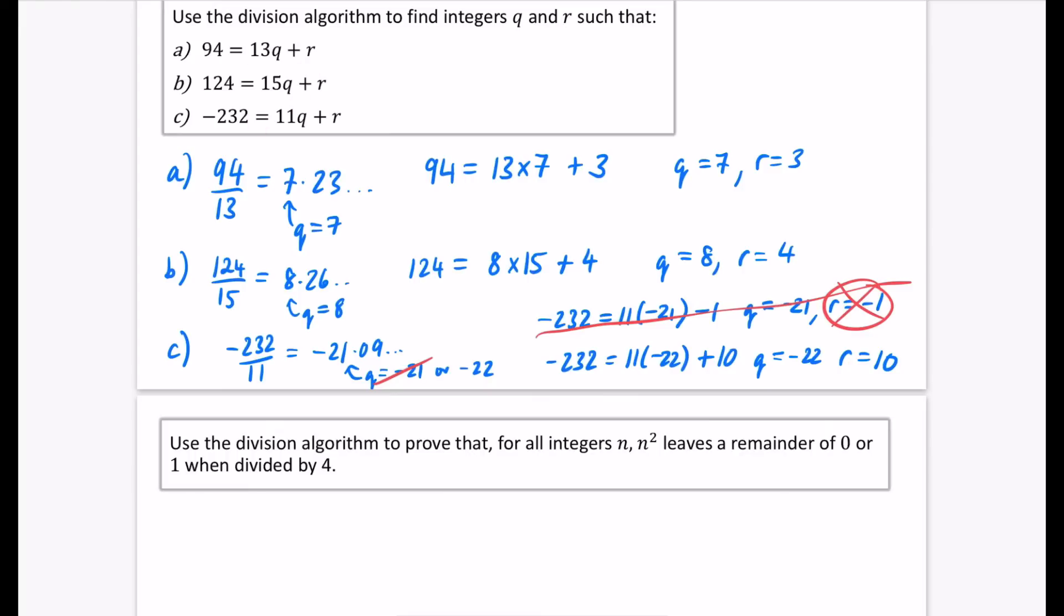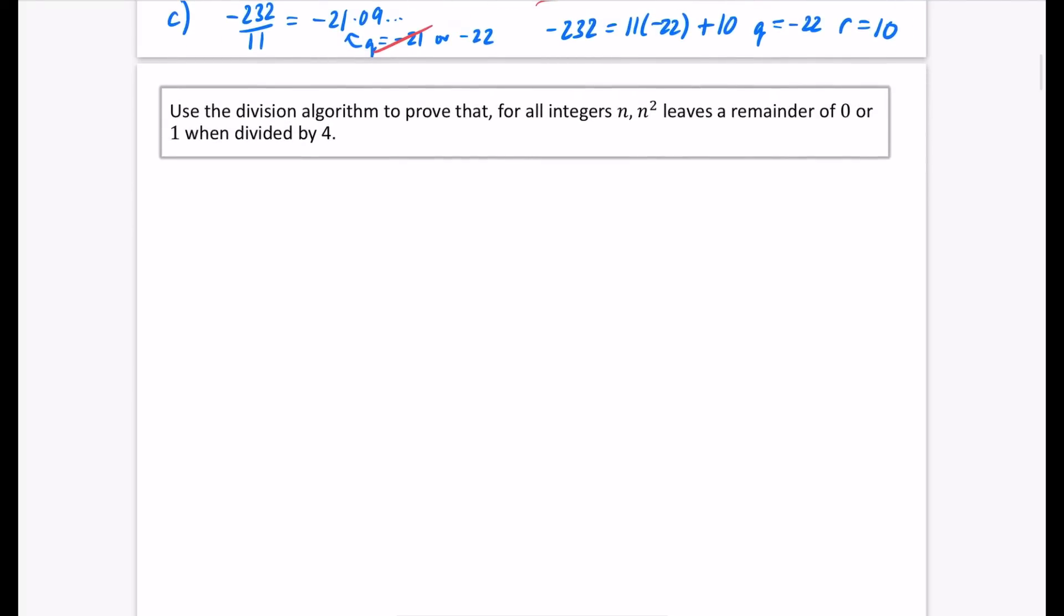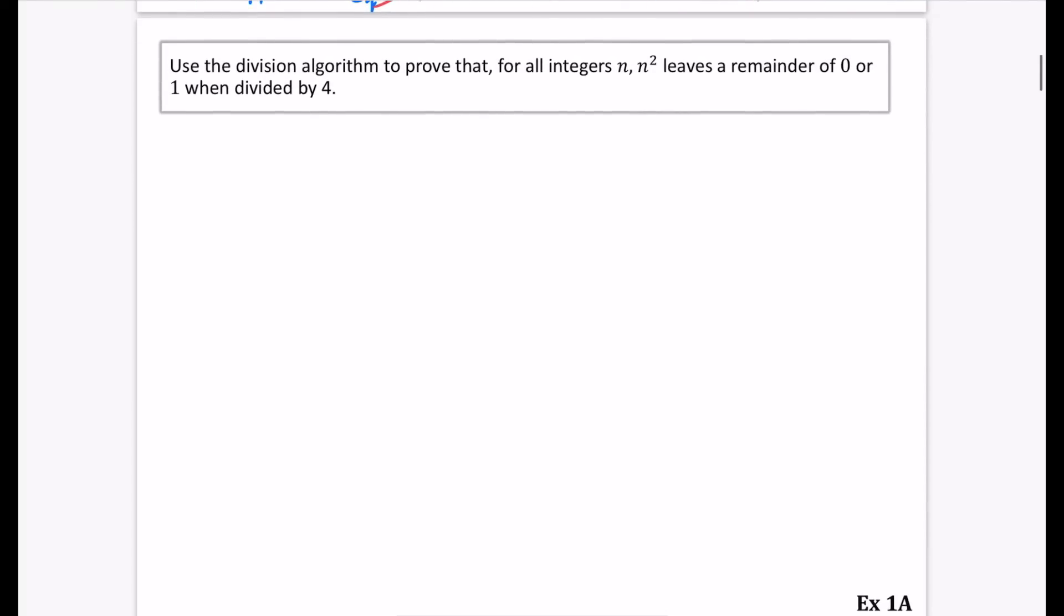So that's why we didn't want to use that line that we had there. Okay, so that's what you're going to do for using this division algorithm to be able to write things out in this way. And the division algorithm does have some other applications. So this is going to be use the division algorithm to prove that for all integers n, n² leaves the remainder of 0 or 1 when divided by 4.